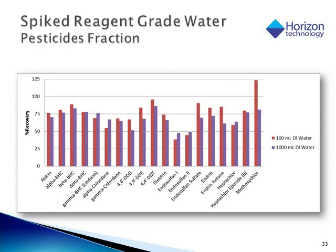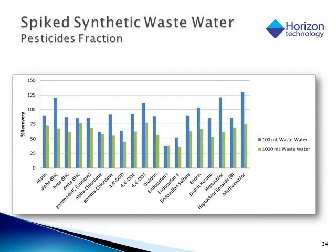Shown are the recoveries for pesticides in reagent water and in synthetic wastewater spiked with a test mix, with 100-milliliter and 1-liter sample recoveries shown side by side. The pesticides in the test mix were about an order of magnitude lower than the other acid-neutral and basic SVOCs. The recoveries for these compounds were quite good, with a slight edge found for the 100-milliliter sample method.